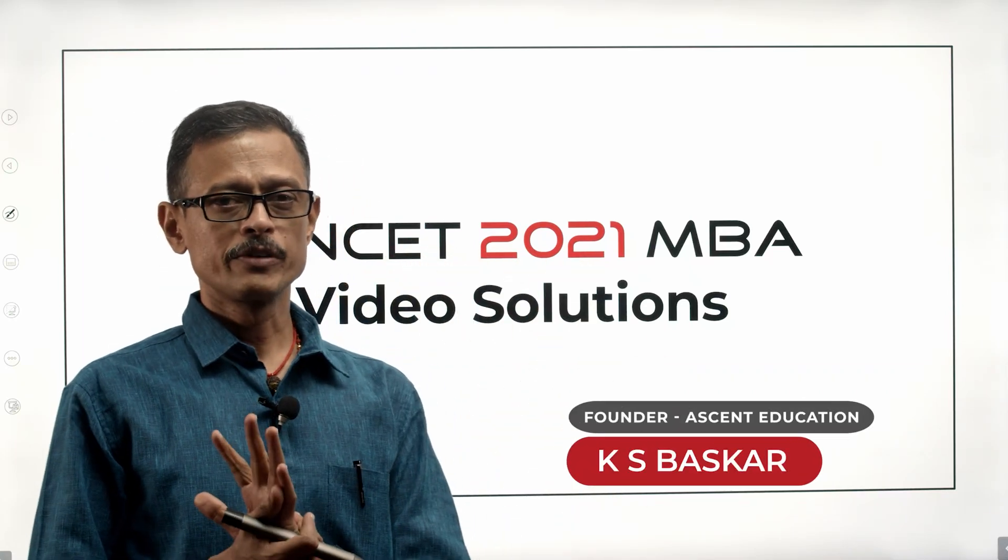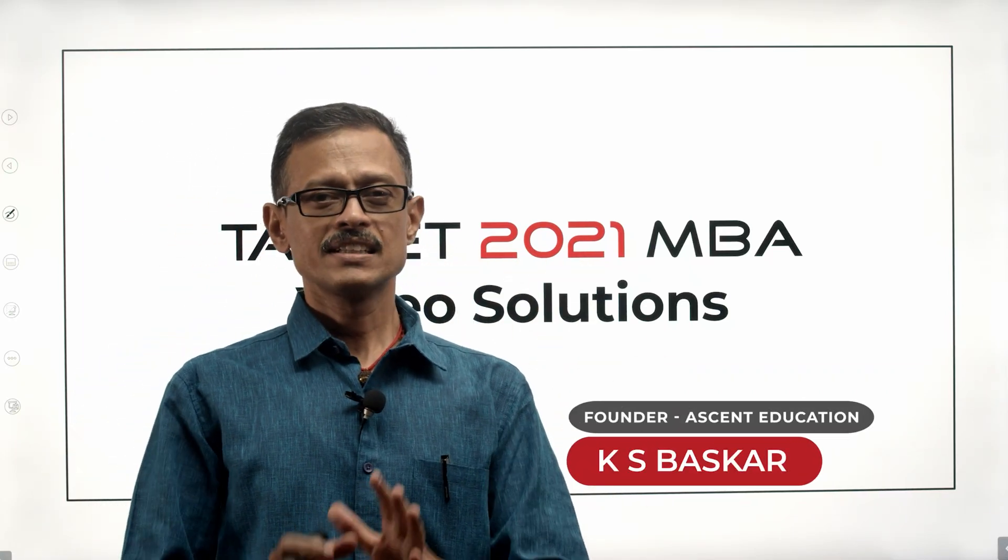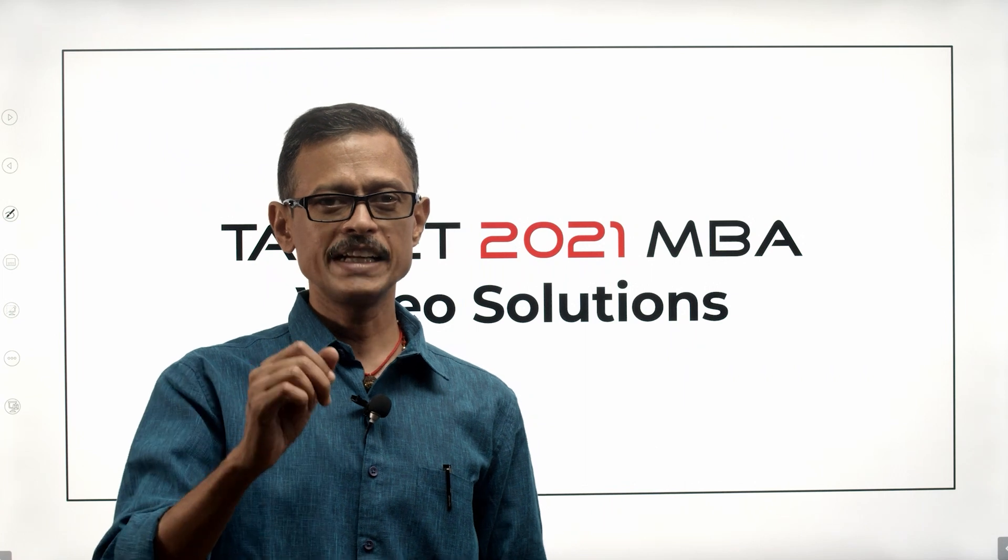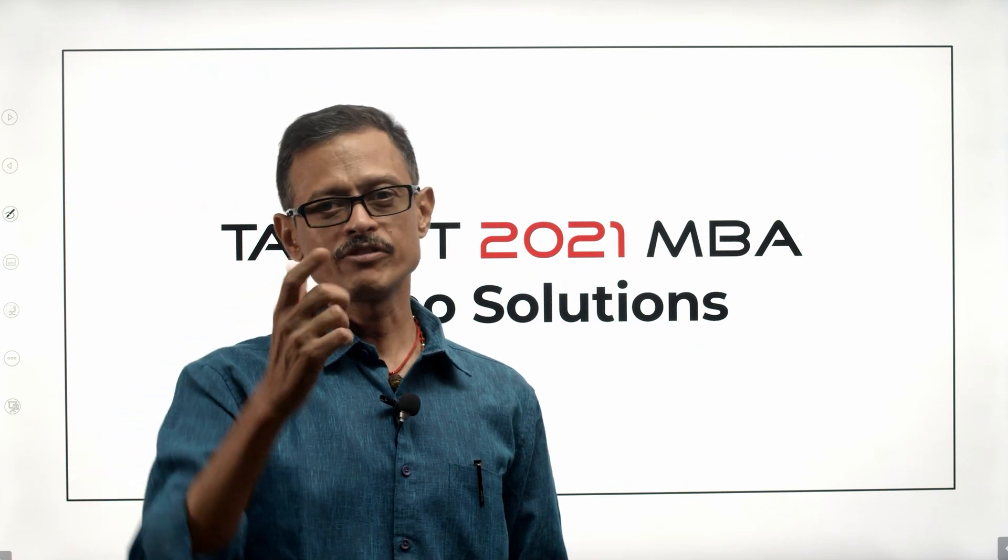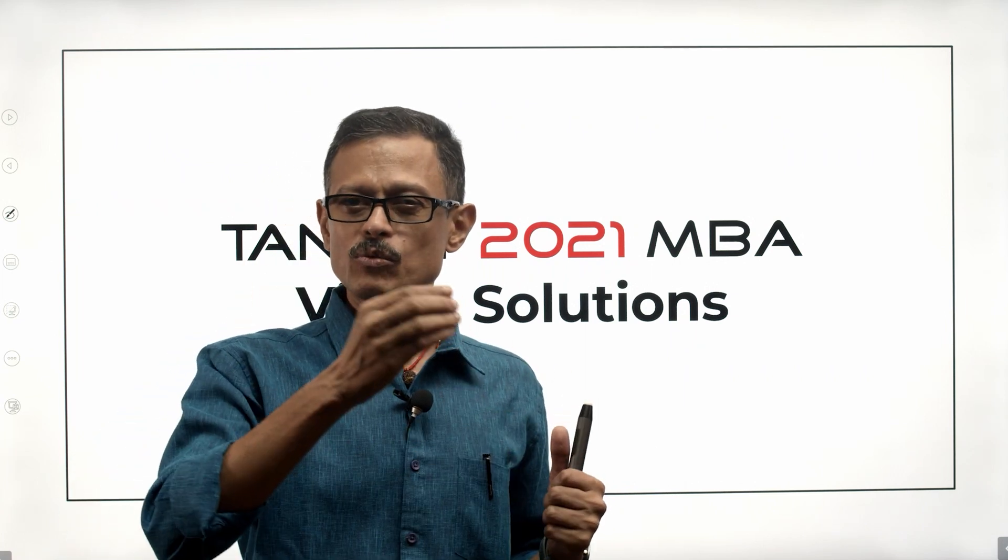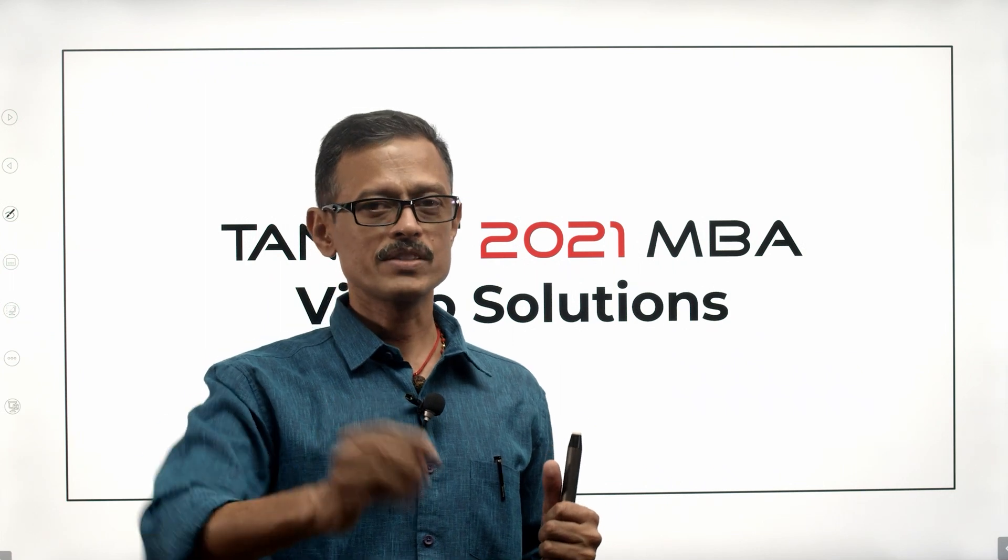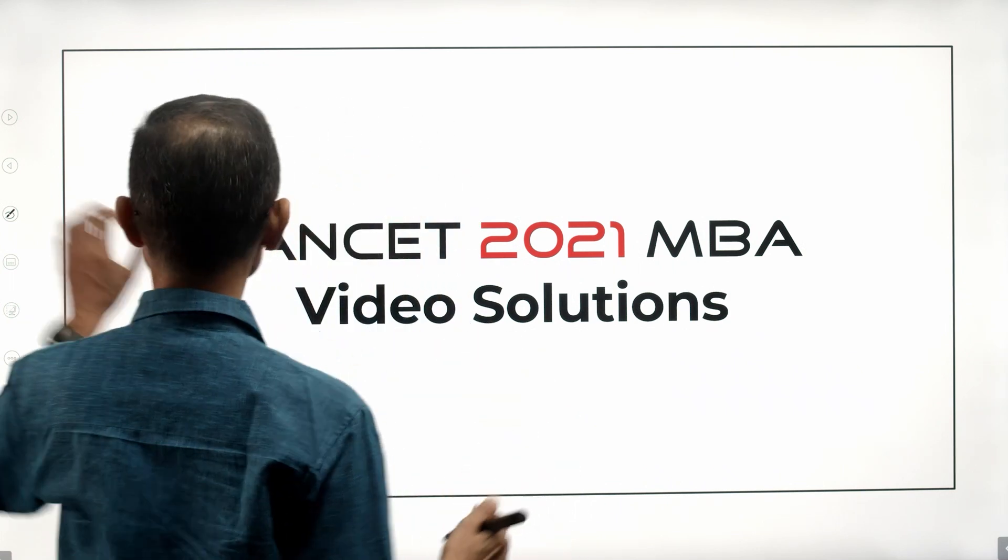This is a 2021 TANCET MBA question. We're going to look at the video solution for a data sufficiency question, the last question in this section, question number 80. Very interesting question, tough question because we tend to overlook certain conditions about numbers and that could cost us this question.